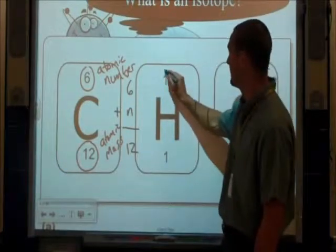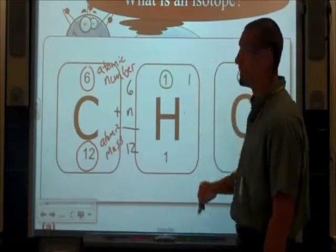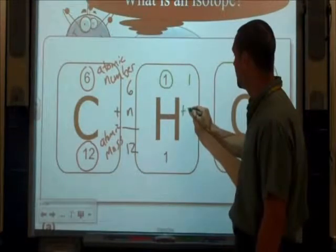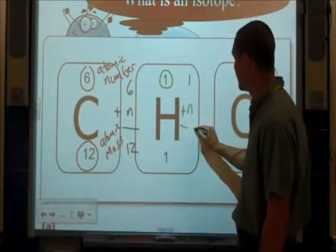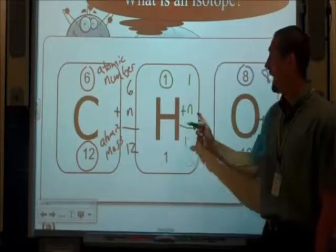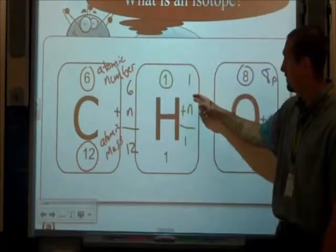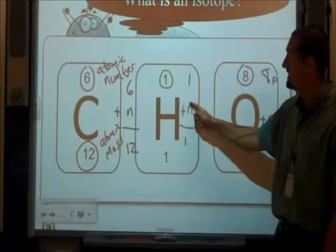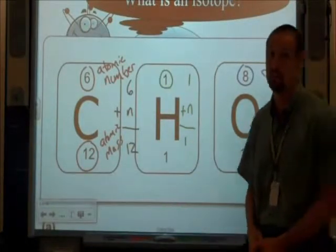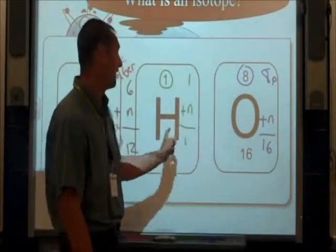Take a look here at hydrogen. Hydrogen has an atomic number of one. That means it has one proton. One proton plus what gives us an atomic mass of one? How many neutrons does hydrogen have? Well, one plus zero is one. So hydrogen does not have any neutrons whatsoever. But an isotope of hydrogen might have a neutron.